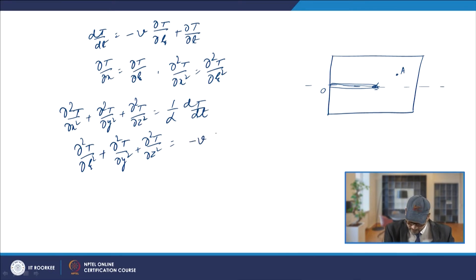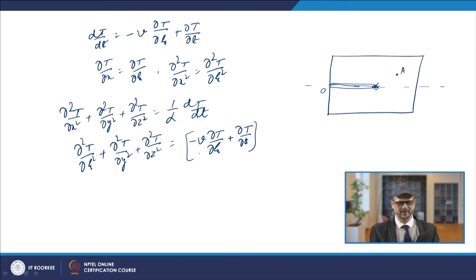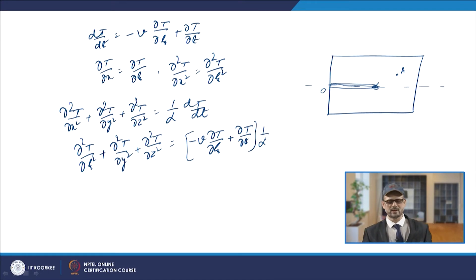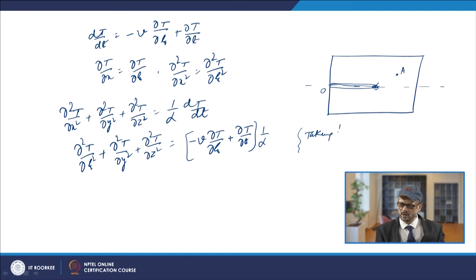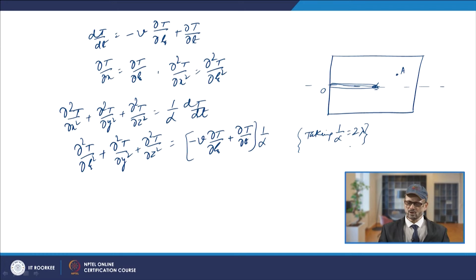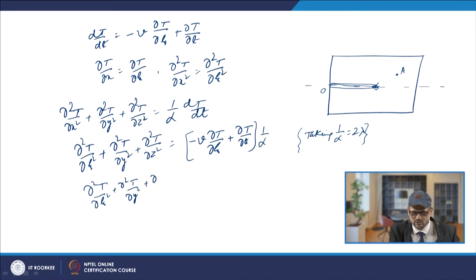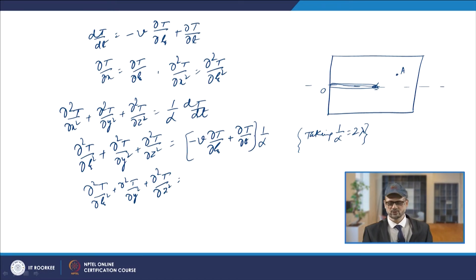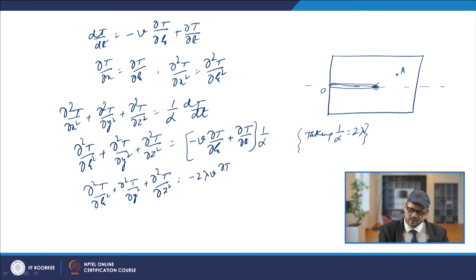For convenience, we take 1/α = 2λ. With this substitution, the equation becomes ∂²T/∂ζ² + ∂²T/∂y² + ∂²T/∂z² = −2λv ∂T/∂ζ + (1/α) ∂T/∂t. Here α = 1/(2λ), so 1/α = 2λ, and the right-hand side becomes −2λv ∂T/∂ζ.